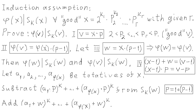On the other hand, w has r prime numbers in its prime decomposition, and therefore by induction assumption, sk of w is divisible by phi of w, which equals phi of v. Also notice that all numbers coprime to w are coprime to x and vice versa; more exactly, the totatives of x are the first phi of x totatives of w.